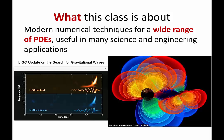It turns out the merger of two black holes has to be solved using numerical techniques. So people have to take Einstein's field equation — which is a nonlinear partial differential equation — discretize it using numerical methods, put it on a supercomputer and run it for days or weeks to get the kind of signal that could be emitted by the merger of two black holes.